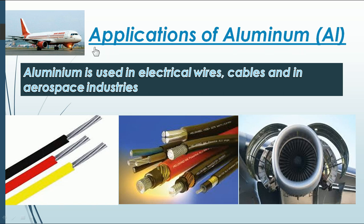Let us see the application of aluminium. Look at this aircraft — in order to fly, two main conditions it should satisfy: it should have less weight, more tensile strength, and should be corrosion resistant. For this purpose iron is not used. Instead, aluminium is chosen because it has the properties of corrosion resistance, low weight, and high tensile strength. For this reason aluminium is used in aircraft parts manufacturing.